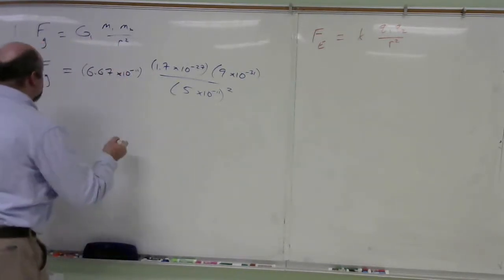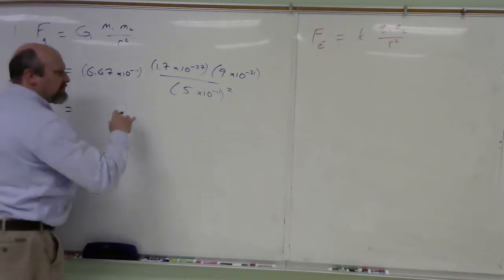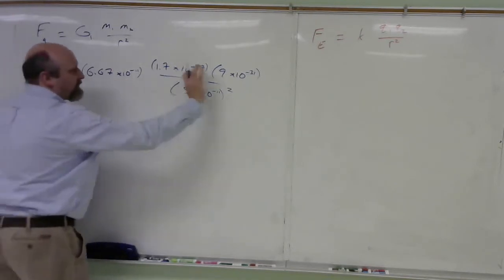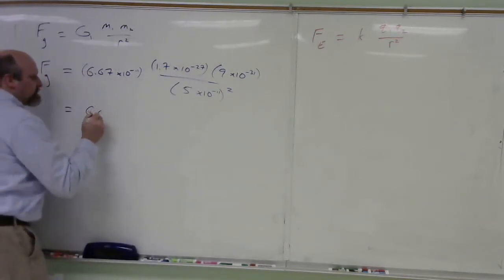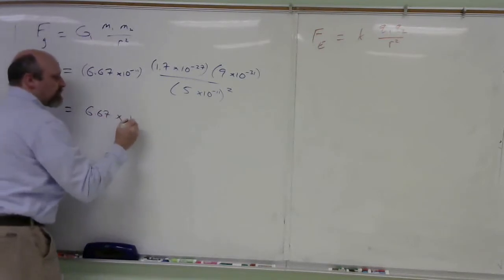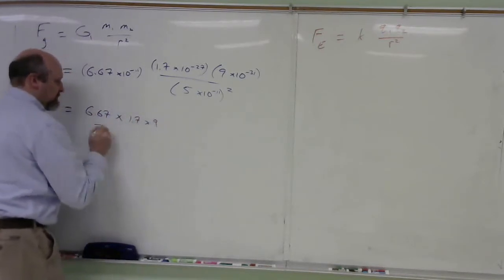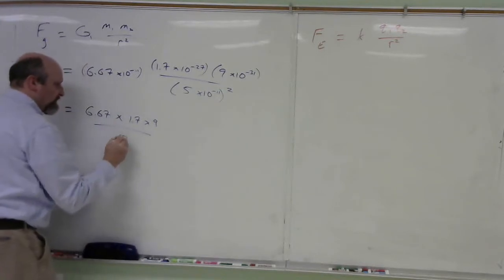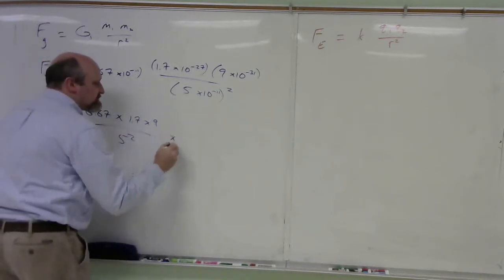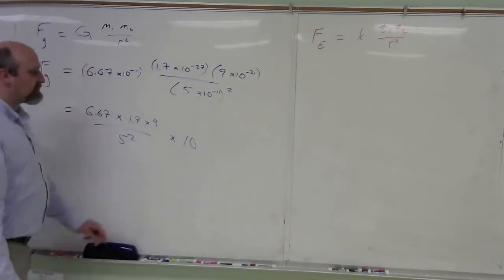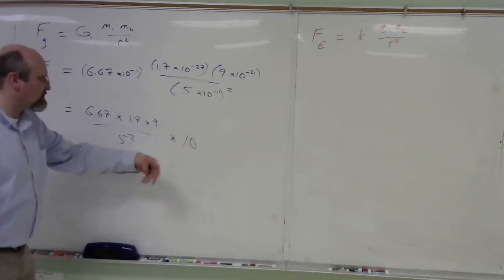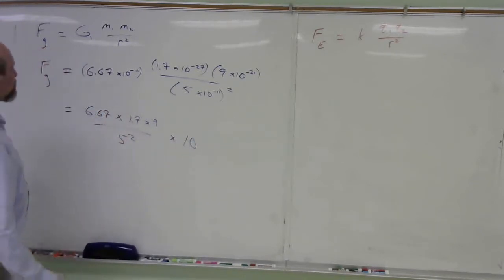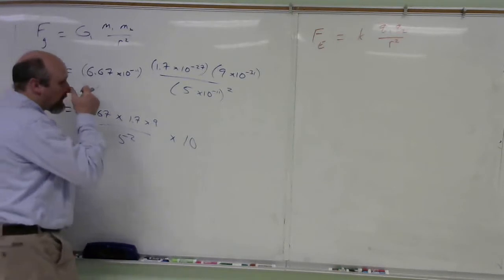Okay. I'm ready to do this calculation. You know that I like to separate my powers of 10 out. So if I were to do this, I'd do 6.67 times 1.7 times 9 divided by, this is going to be squared, so that's 5 squared. And then the powers of 10 I do to the side in my head, so I don't have to punch this in the calculator. I'm just punching this in the calculator. I feel like I'm less likely to make a mistake that way.